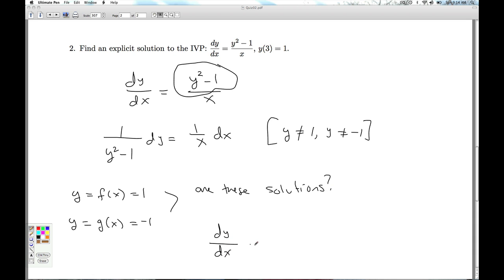Well, heck yeah, they are. Here's the differential equation. If I substitute in y equals f of x equals one, the derivative of y is zero. Y squared minus one is zero over x, which is zero. So, that checks. Same thing can be said for y equals g of x equals negative one. So, guess what?